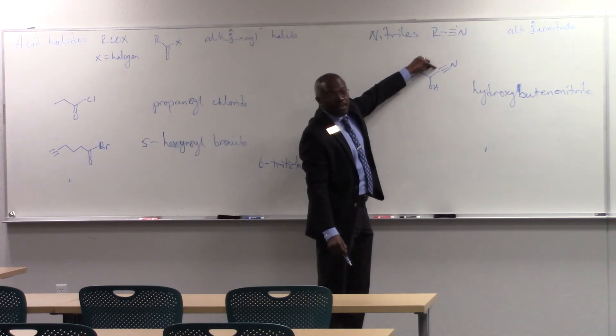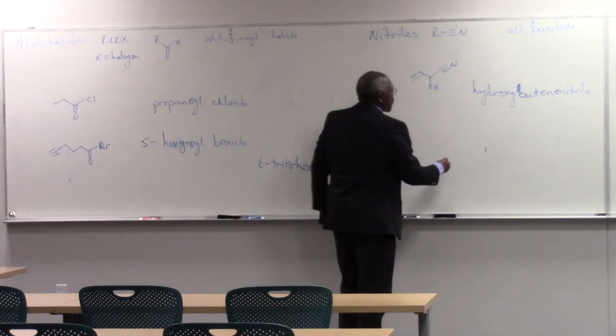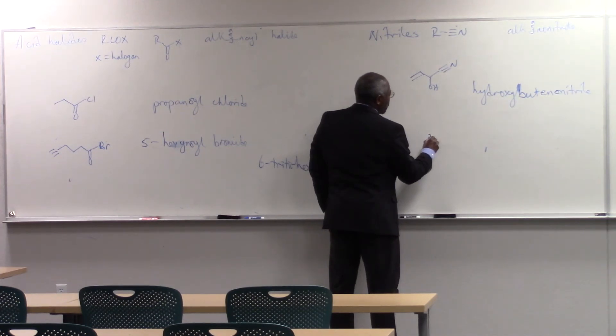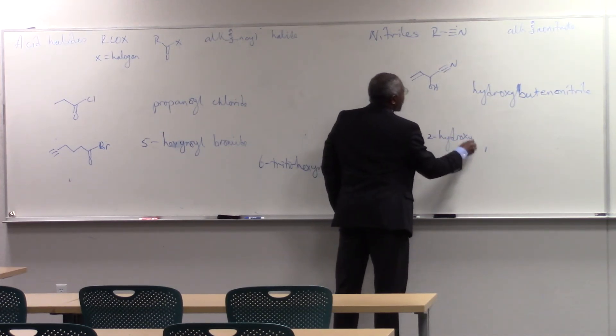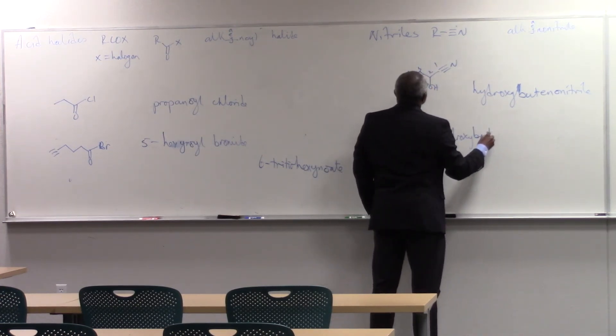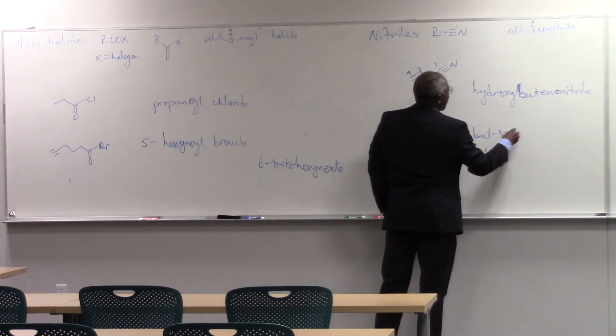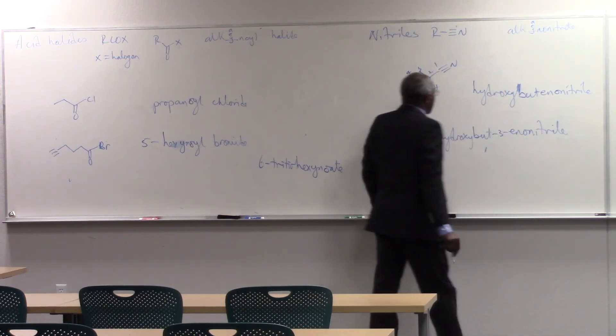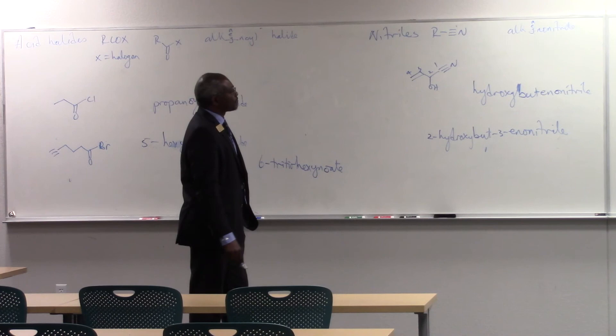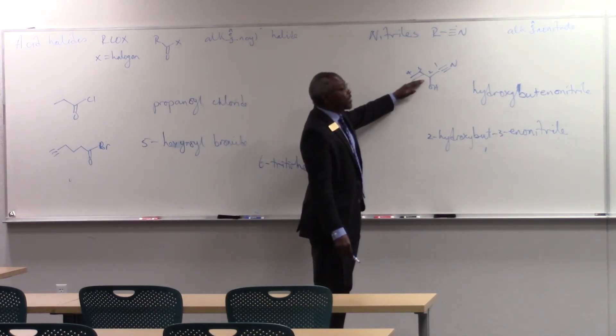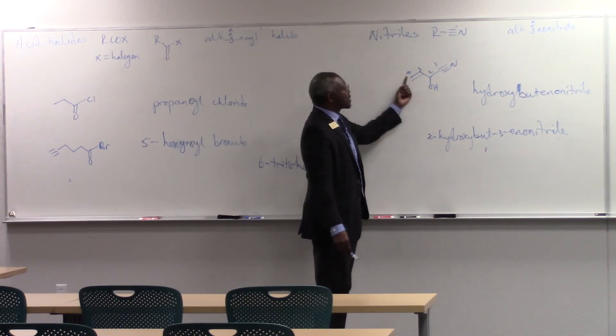Major functional group, carbon one, and so I'm going to call this, I'm going to call this 2-hydroxy, all right, so this is one, two, three, four, 2-hydroxybutenonitrile, 2-hydroxybutenonitrile, and I don't need to give a configuration for this because it's not capable of geometric isomerism, this carbon has two Hs.